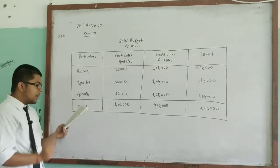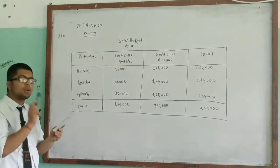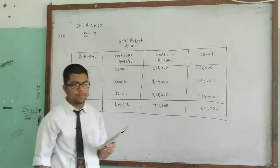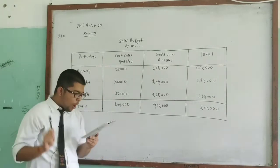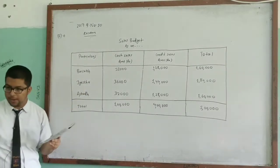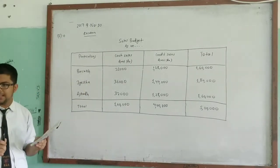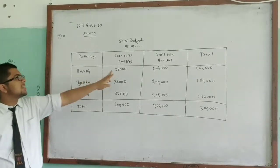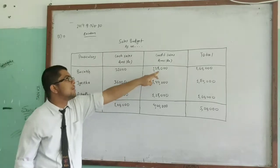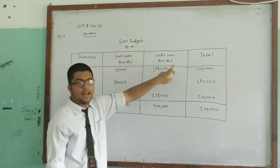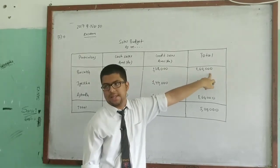For Baisakh, 16% of total sales of Rs. 10 lakh equals Rs. 1 lakh 60,000. Of this, 20% is cash sales, which is Rs. 32,000. And 80% is credit sales, which is Rs. 1 lakh 28,000. So total sales for Baisakh is Rs. 1 lakh 60,000.